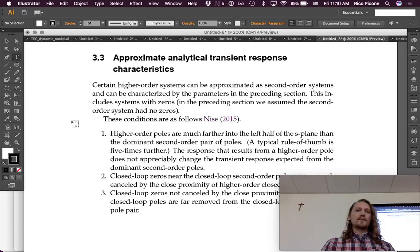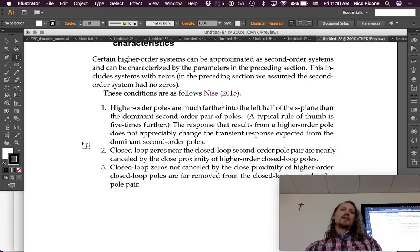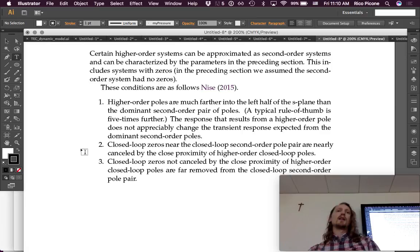and we'll talk about all the conditions here. So, higher-order systems can be approximated as second-order, and so can second-order systems with zeros and higher-order systems with zeros, which were not covered in the preceding two sections. So, these conditions, for these approximations being valid, are as follows.